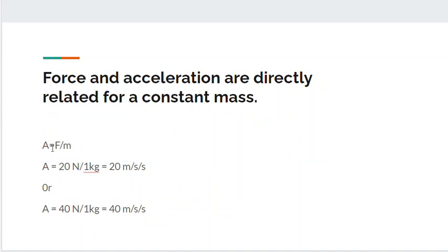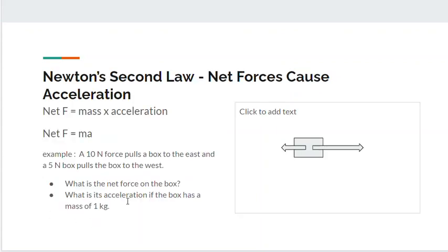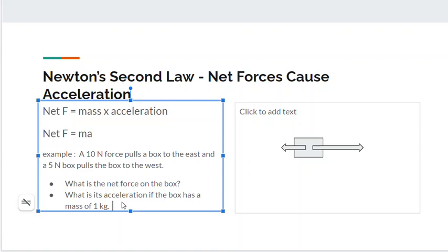If I wanted to find acceleration, then I would want to rearrange my equation for acceleration. The acceleration formula is the net force divided by the mass. If the net force is 5 newtons and the mass is 1 kilogram, then the acceleration will be 1 meter per second squared.